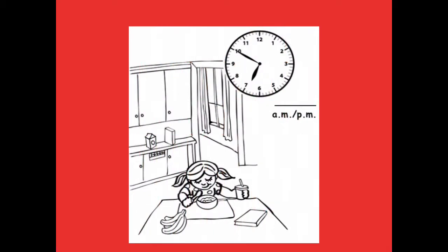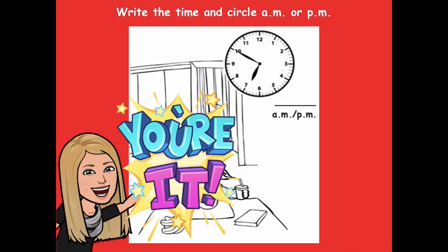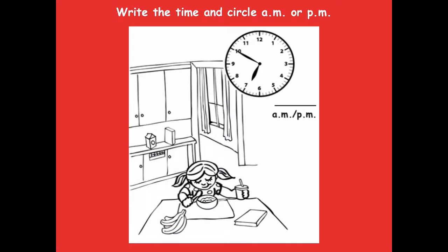What's happening in this picture? It looks like she's eating some breakfast. Pause the video, write the time, and circle AM or PM. When I look at the clock, the hour hand is pretty close to the 7 but not quite there yet, so we're still in the 6 o'clock hour. The minute hand is pointing to the 10, so count by 5s: 5, 10, 15, 20, 25, 30, 35, 40, 45, 50. The time is 6:50, and because she's eating breakfast, it's AM.